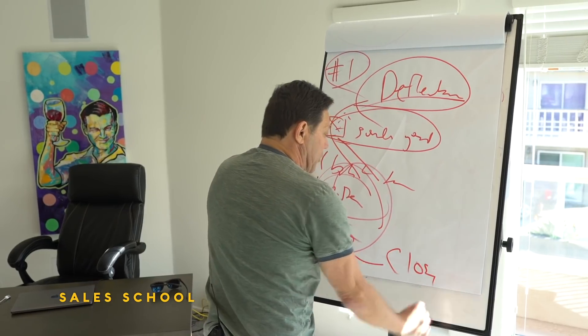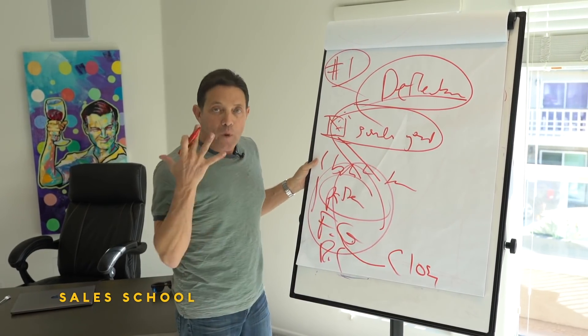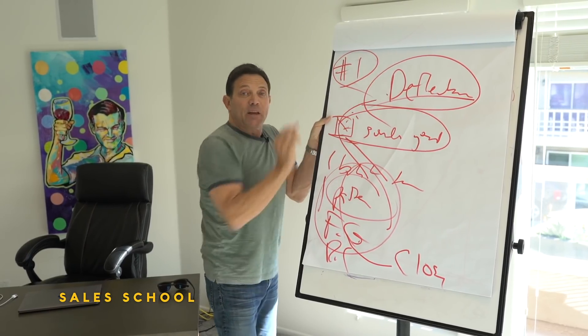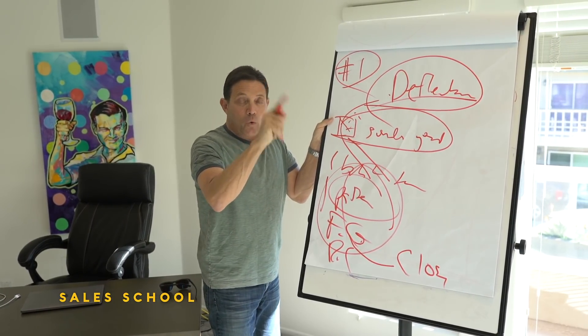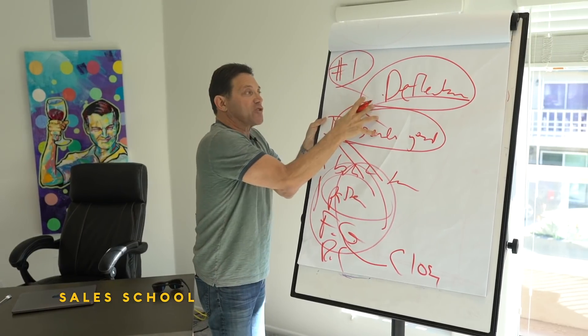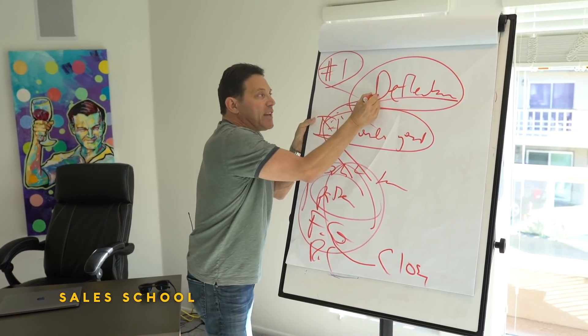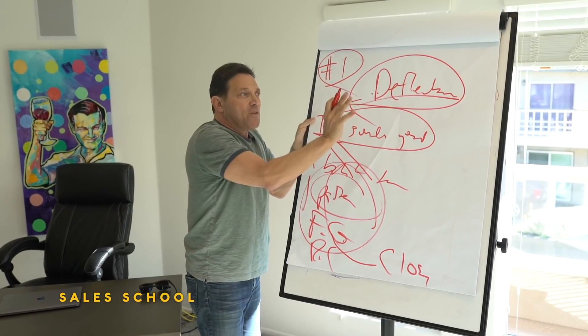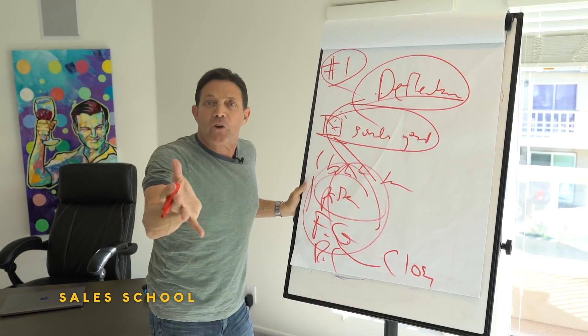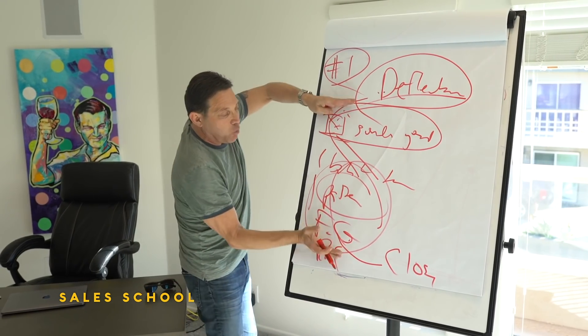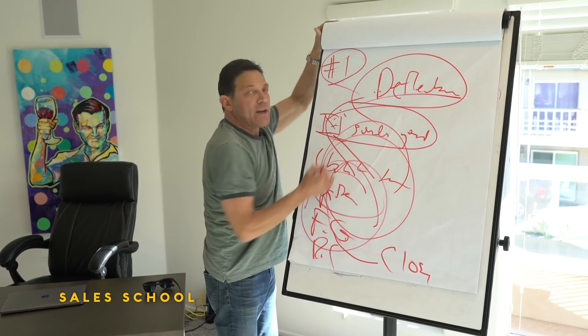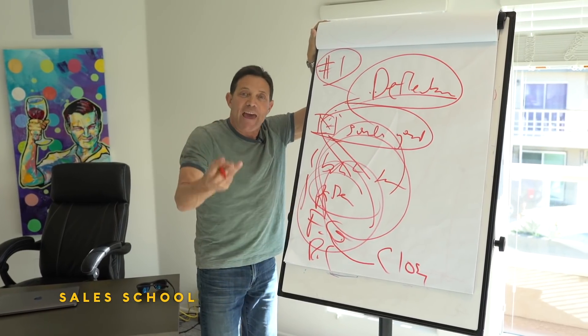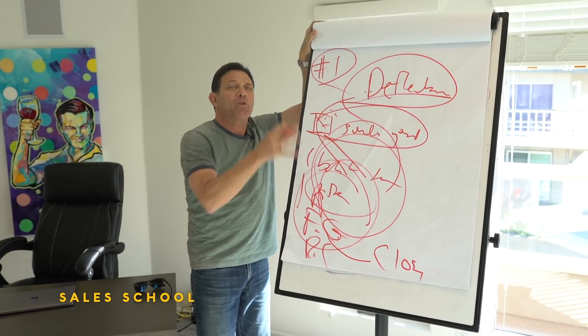That's all in this middle part of the loop, and then I transition into a close and I ask for the order. A loop always begins with either deflecting the objection in the first one, or then in the second one you actually get to answer the objection. But I'll never just say I hear what you're saying, give me one shot and buy from me.